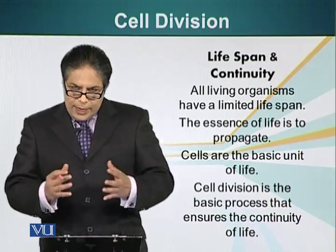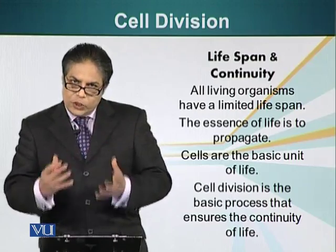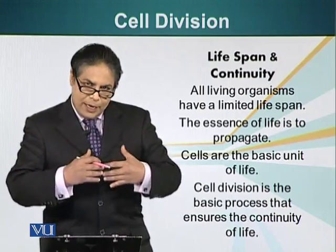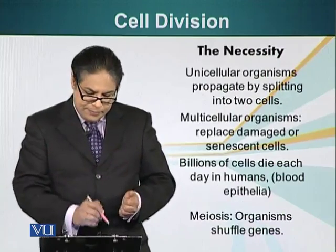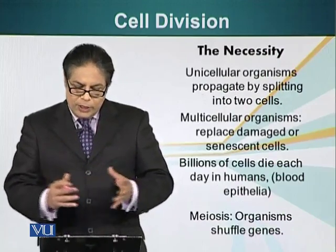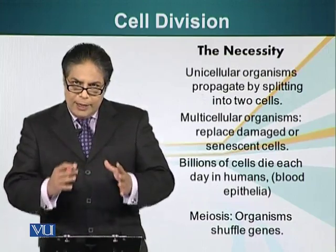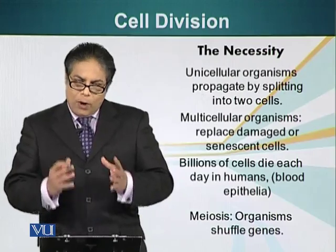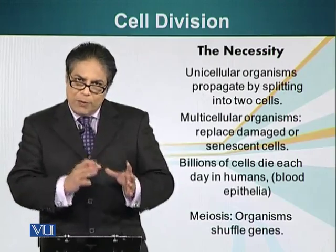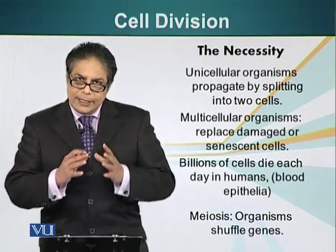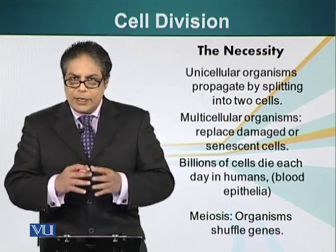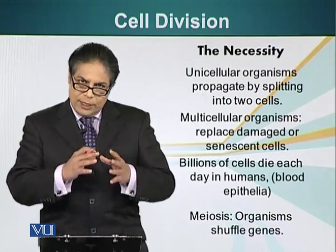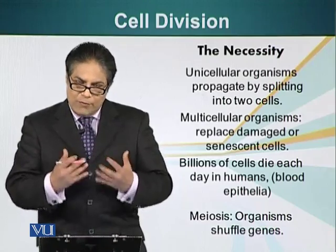Cell division — this process ensures the continuity of life. From one cell, we can make more than one cell, or two cells. Unicellular organisms propagate by splitting into two cells. Multicellular organisms, organisms that are made up of many cells, need cell division to replace old dead cells or senescent cells in order to keep their organs and tissues functional and viable.